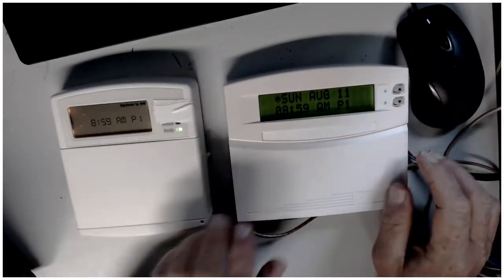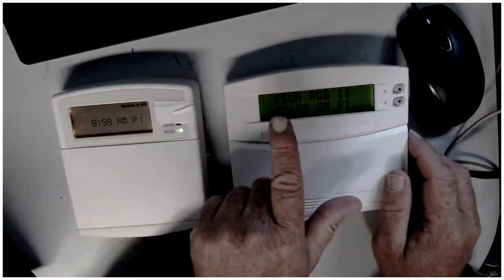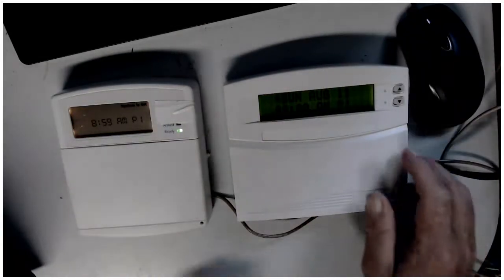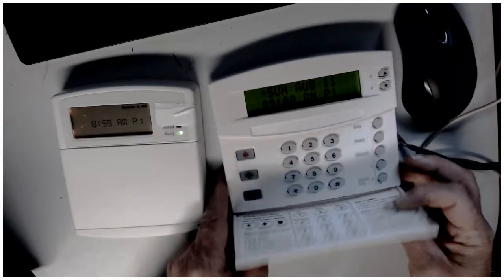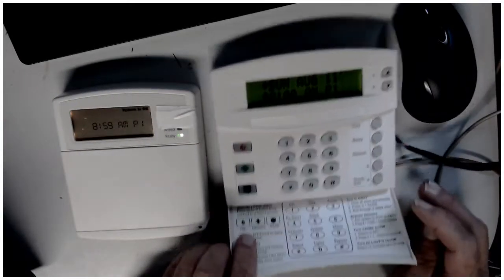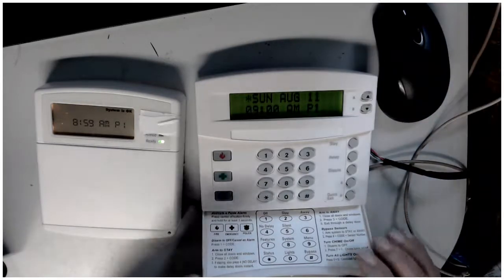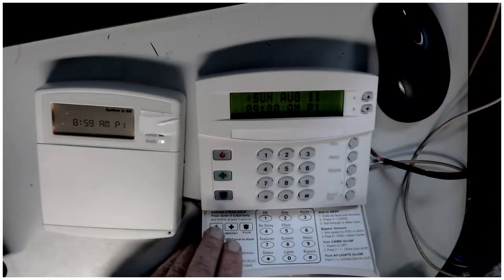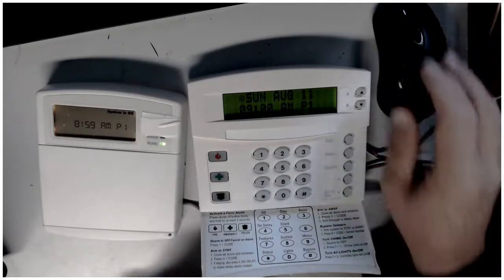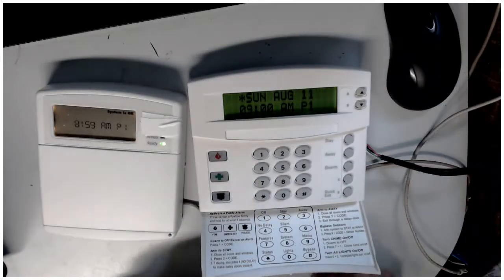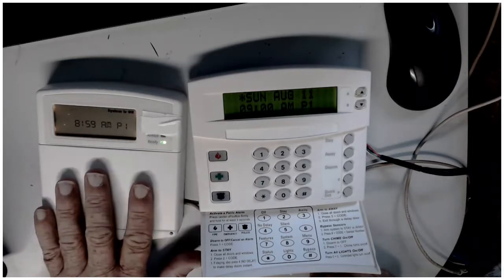So now this keypad is off the wall and you notice on your other keypad that little star right there, that star is flashing. So the star is flashing means that your system is in trouble. So you hit the star key and it says bus failure unit one. So this must be unit one.